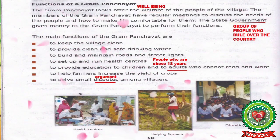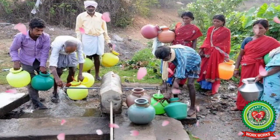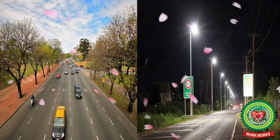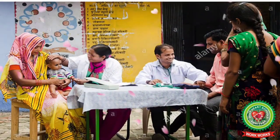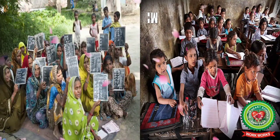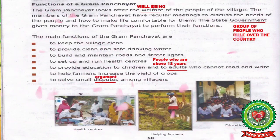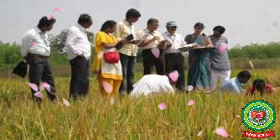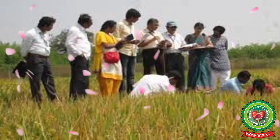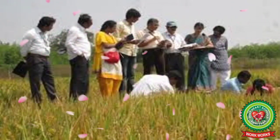The main functions of the Gram Panchayat are: to keep the village clean, to provide clean and safe drinking water, to build and maintain roads and street lights, to set up and run health centers, to provide education to children and to adults who cannot read and write, and to help farmers increase the yield of crops. To help the villagers, the Panchayat appoints a Gram Sevak, who tells them how to grow better crops with new techniques and works as a friend and guide to the village.